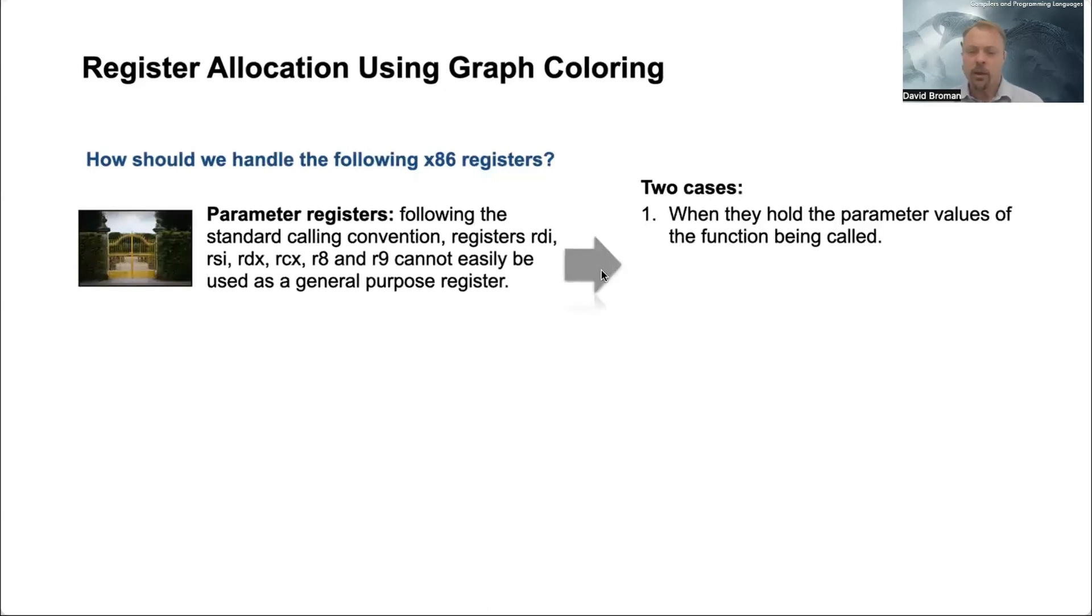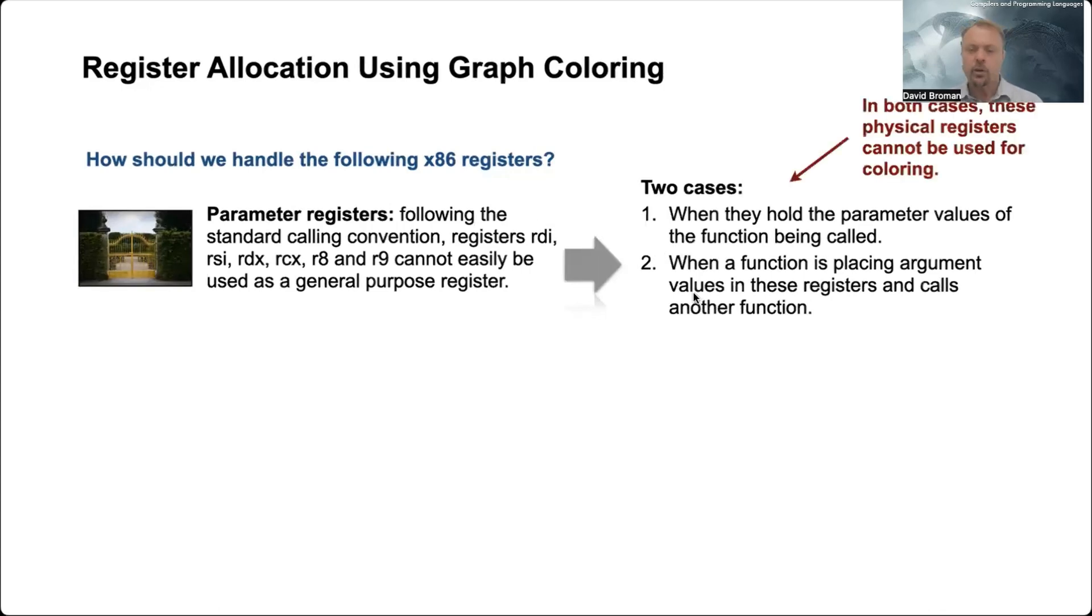And there are two cases here. One is when the function is called - you have to use that and keep the values in the parameters, or you have to put them as an argument when you are calling. So in one way, you need to handle this in the graph coloring approach.